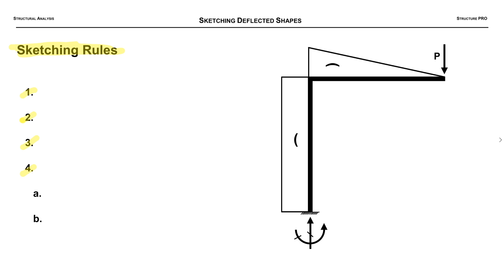We're going to go over four rules that deal with sketching the deflected shapes of beams and frames. We're not going to worry about trusses. We'll also cover some examples.